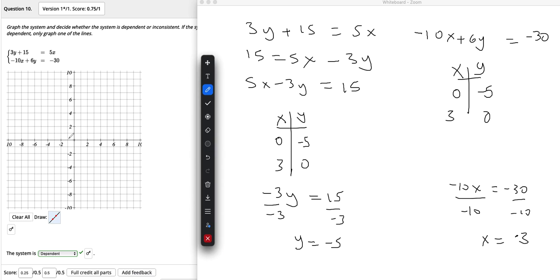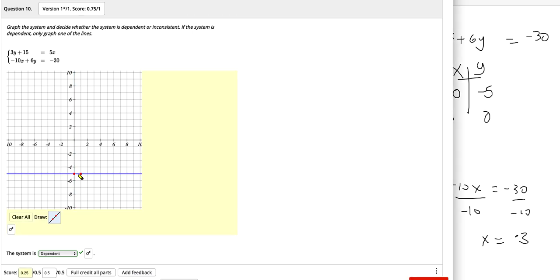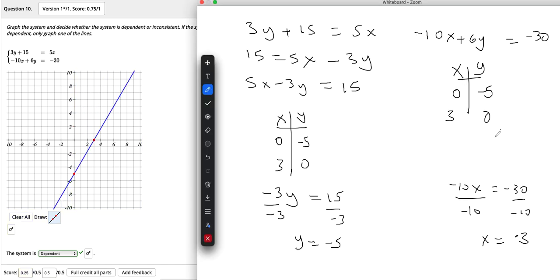And then just to get this thing graphed, so when x is 0, y is negative 5, right there. And when x was 3, y was 0. Is that right? Yep. And so that would be it because they're identical lines and hence it's dependent.